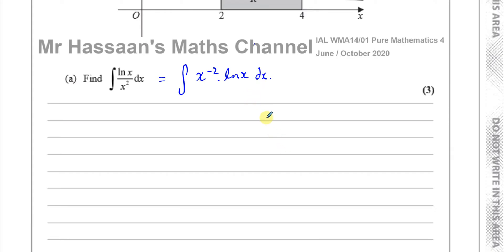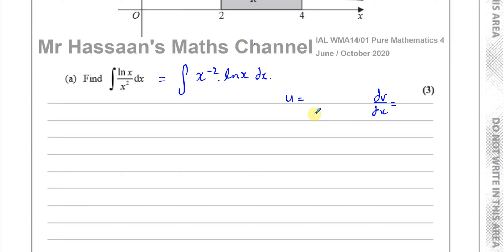Integration by parts involves choosing one of the terms as u, which we differentiate, and the other part as dv/dx, which we integrate to give v. The formula is given in the formula book, but I set up the question in a way that makes it straightforward. I'll choose u as ln x because it's easy to differentiate and breaks down simply, and it's not easy to integrate. I'll choose dv/dx as x to the power of minus 2.